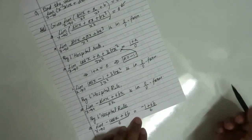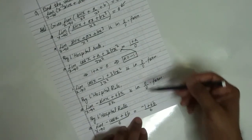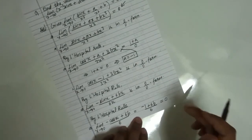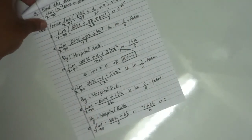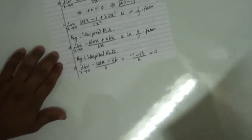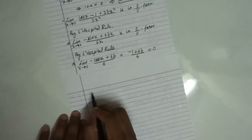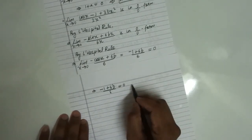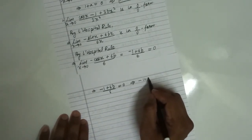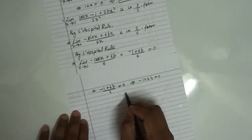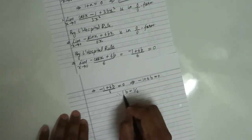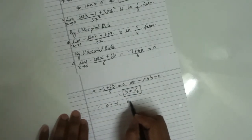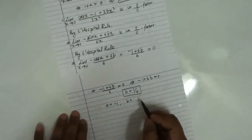This is now a finite value, and according to the question the limit equals 0, so minus 1 plus 6b over 6 equals 0. This implies minus 1 plus 6b equals 0, therefore b equals 1 by 6. Therefore, a is equal to minus 1 and b is equal to 1 by 6.